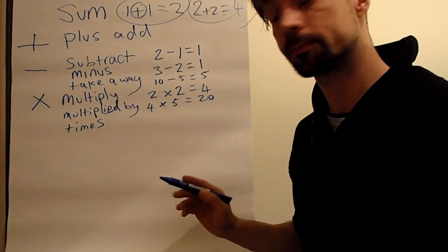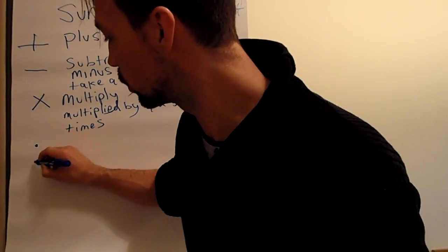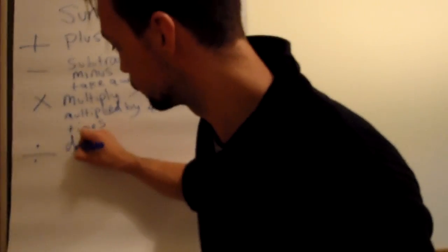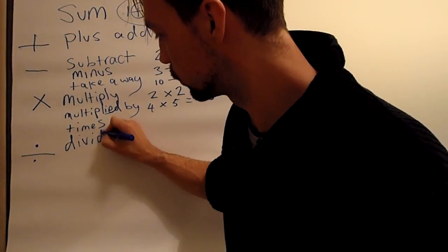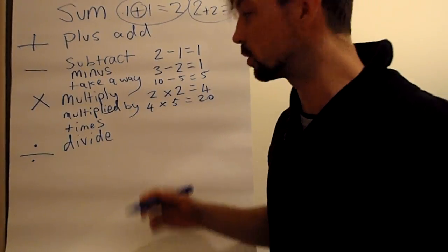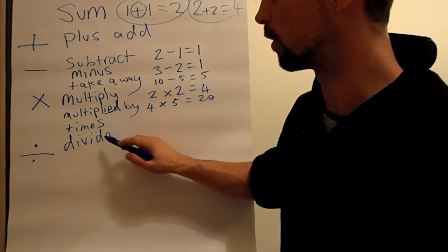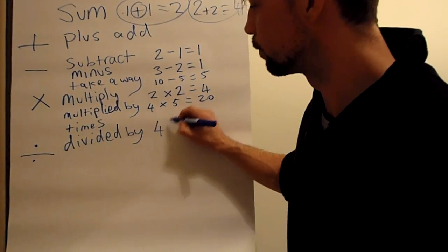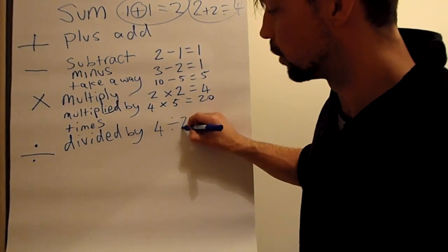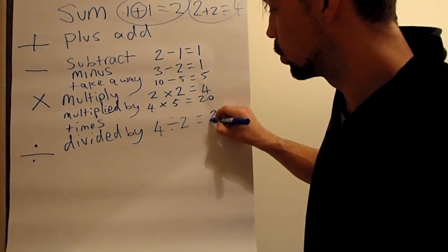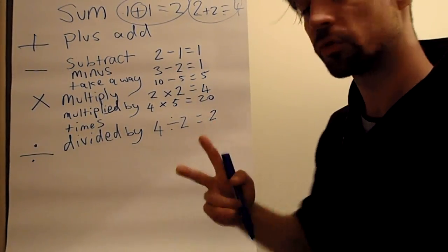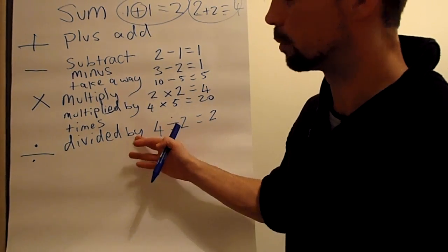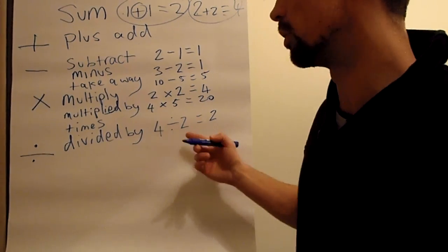The last one of these four is called divide. When we use it, it's the same as multiply: divided by. So 4 divided by 2 equals 2, because 2 goes into 4 twice.